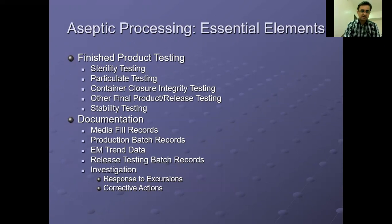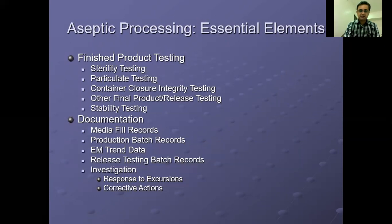Finished product testing includes sterility testing, particulate testing, container closure integrity testing, final product release testing, and stability testing. Sterility testing indicates whether the tested samples were free of microorganisms. Particulate testing ensures particles within the container are within limits. Container closure integrity testing ensures that during transport and use, the container closure maintains integrity and microbial ingress does not occur. Stability testing ensures the product maintains its required chemical and microbial characteristics throughout its shelf life.